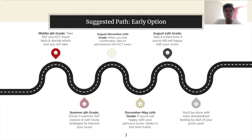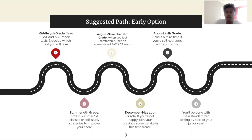Once you feel comfortable, in early sophomore year between August and November, take an administered SAT and ACT official exam. Then between December and May of your sophomore year, if you're not happy with your previous score, you can retake it for the second time.